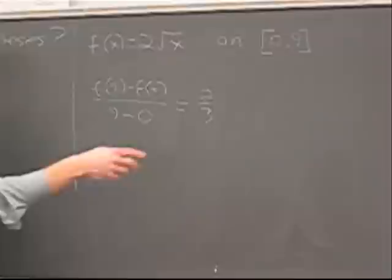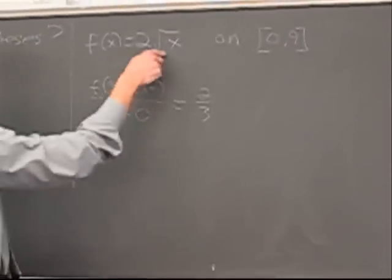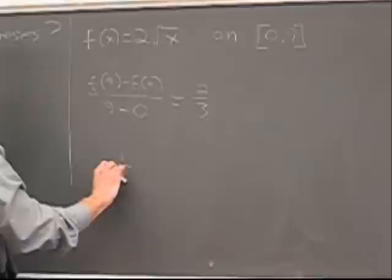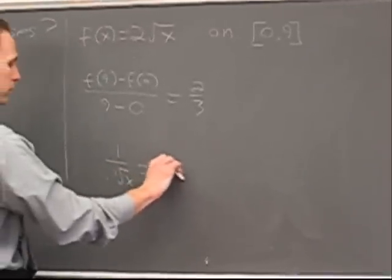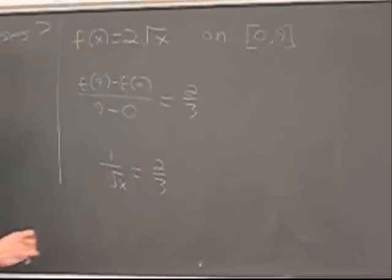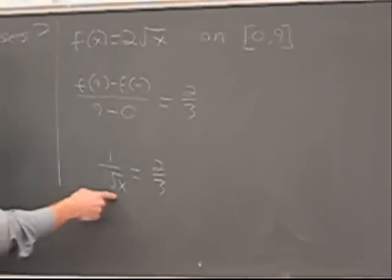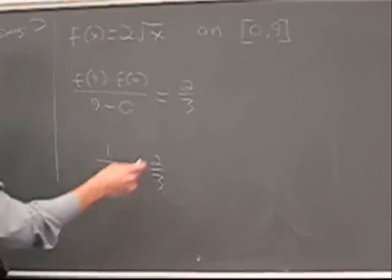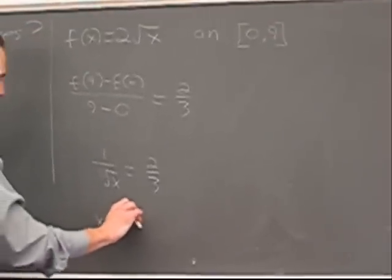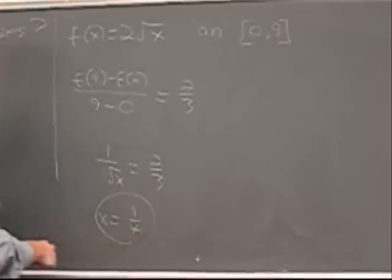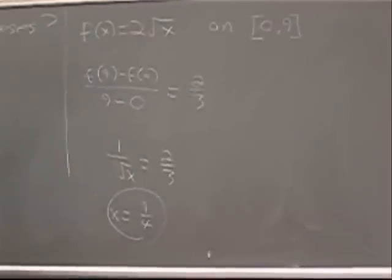and it turns out to be two-thirds. All right, the slope of the line joining the endpoints is two-thirds. Therefore, there has to be some spot where the derivative of this function, which is 1 over radical x, equals two-thirds. And the answer has to be inside the open interval 0, 9. So it's a quick solve. You solve this up, cross-multiply, and then you square both sides, and you get x equals nine-fourths. Nine-fourths is certainly inside the interval, so that's the value guaranteed to exist.